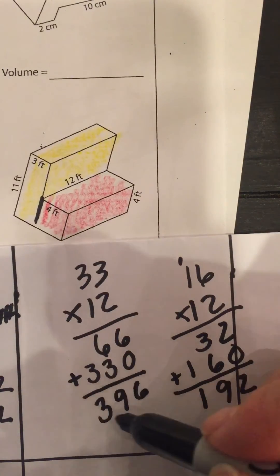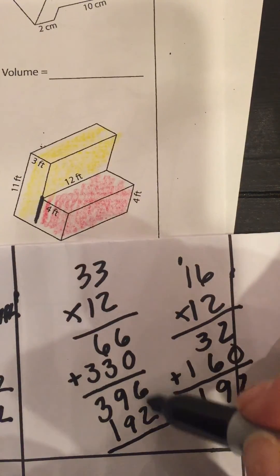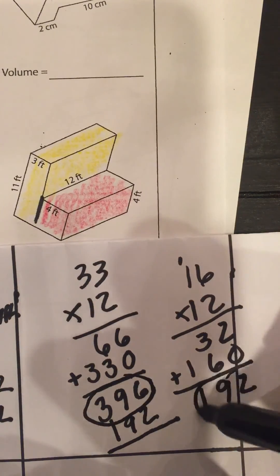Now we add both of these together. 192 plus 396.